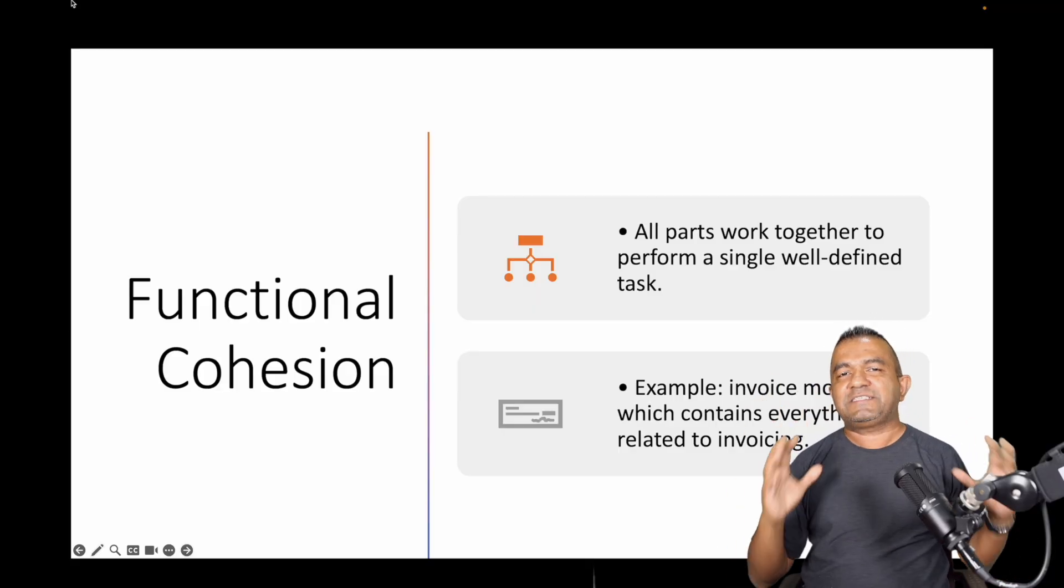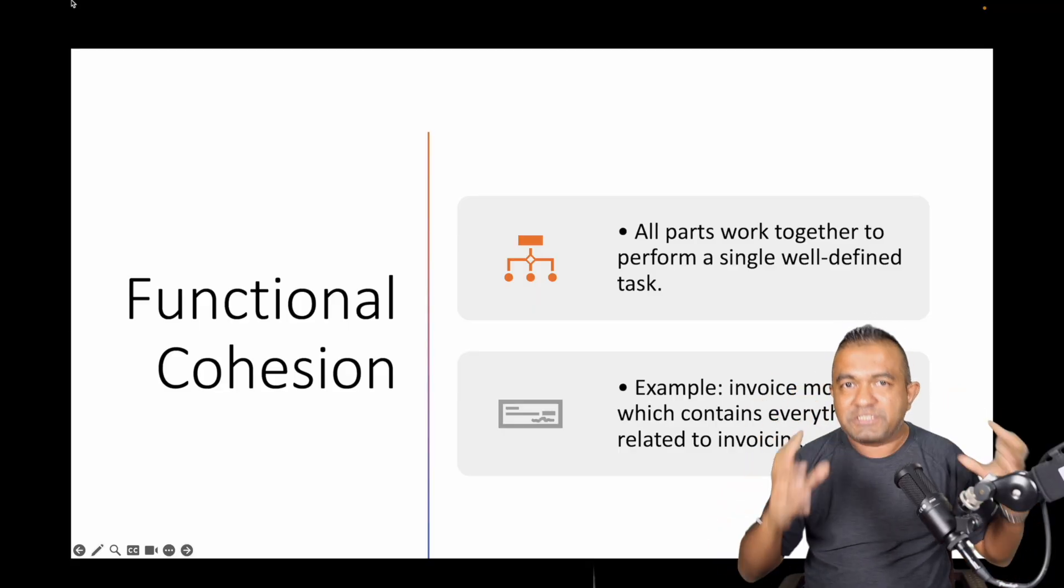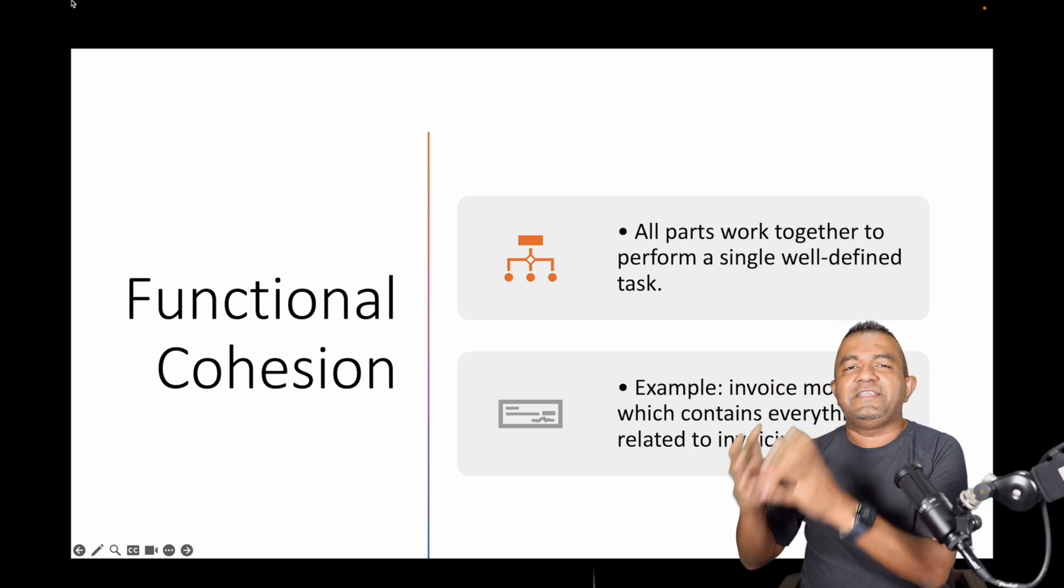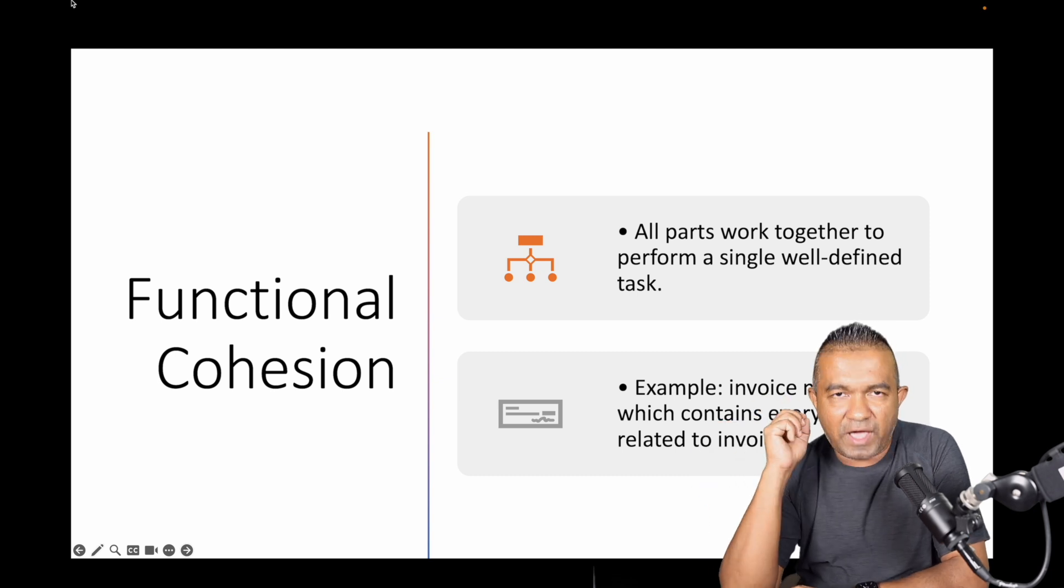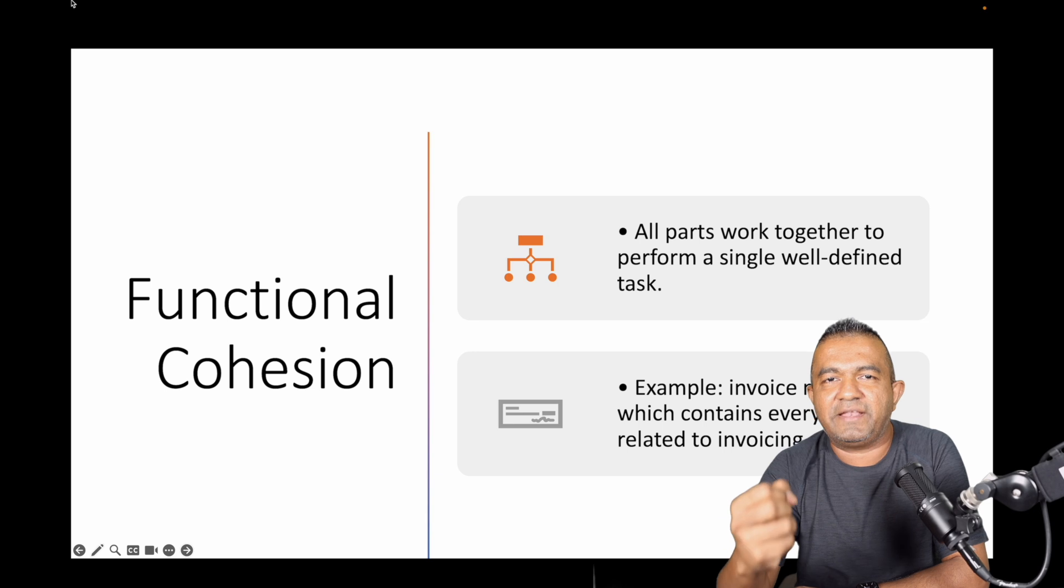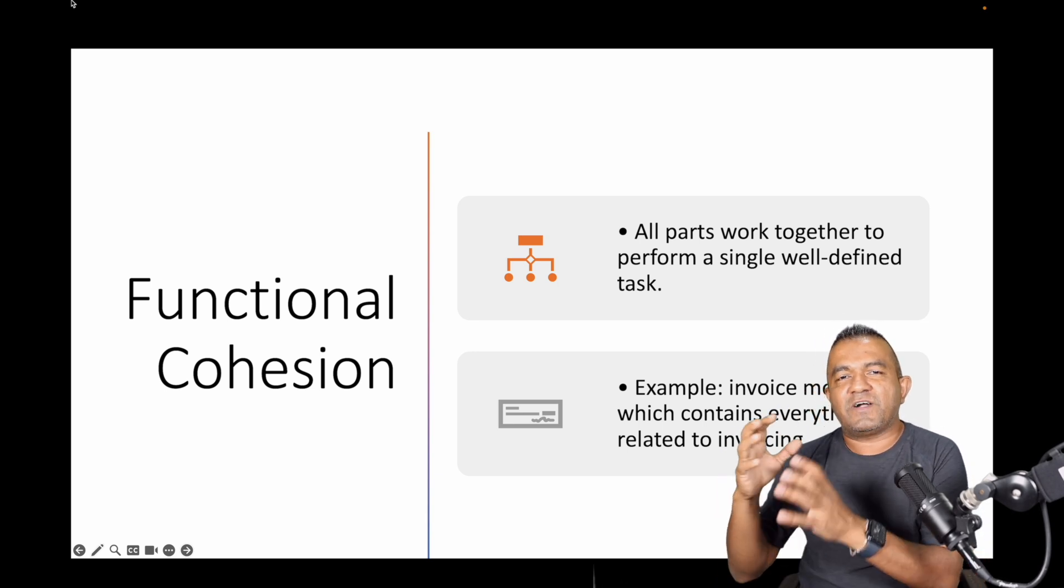In general, we measure seven different cohesion types from best to worst. The first one is the best and the last one is the worst. First one is functional cohesion. Functional cohesion is the best thing. Put things where they deserve. For example, if you have an employee module and a bounded context, do that and do it well.